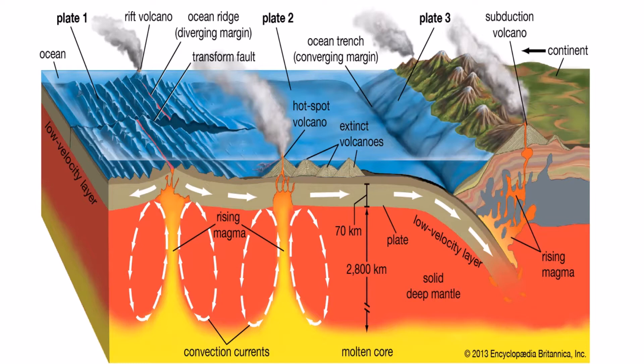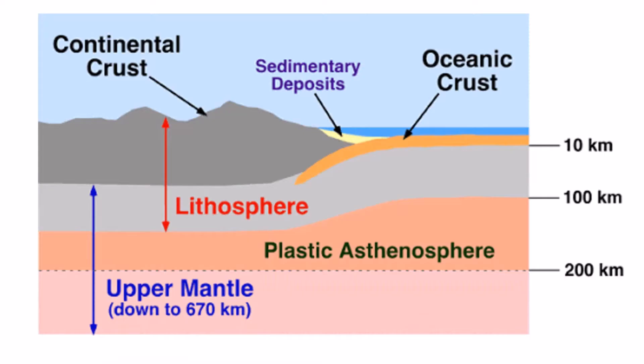Plate movement is possible because the lithosphere-asthenosphere boundary is a zone of detachment. As the lithospheric plates move across Earth's surface, driven by forces as yet not fully understood, they interact along their boundaries — diverging, converging, or slipping past each other. While the interiors of the plates are presumed to remain essentially undeformed, plate boundaries are the sites of many of the principal processes that shape the terrestrial surface, including earthquakes, volcanism, and orogeny — that is, formation of mountain ranges.